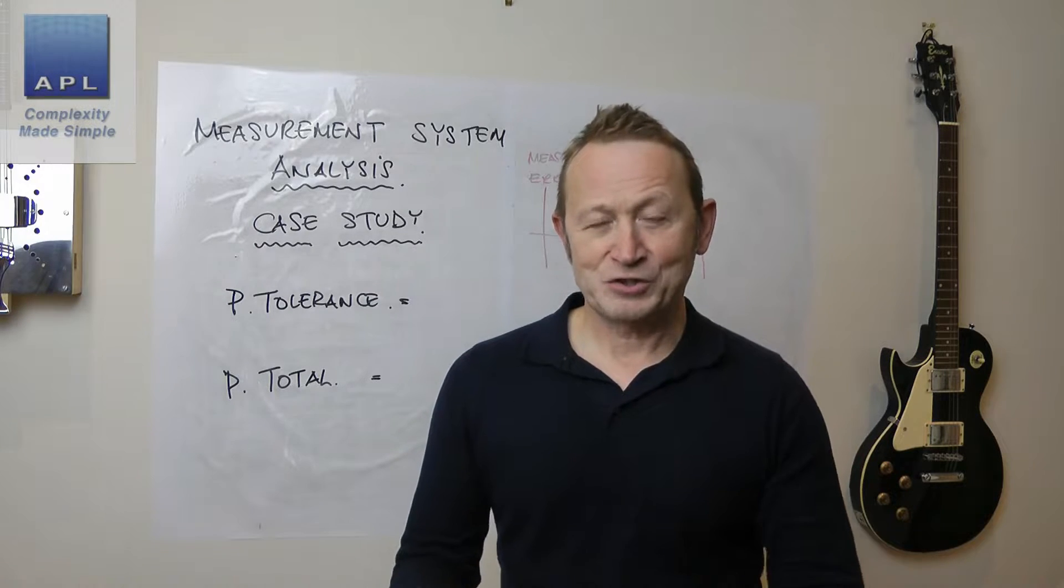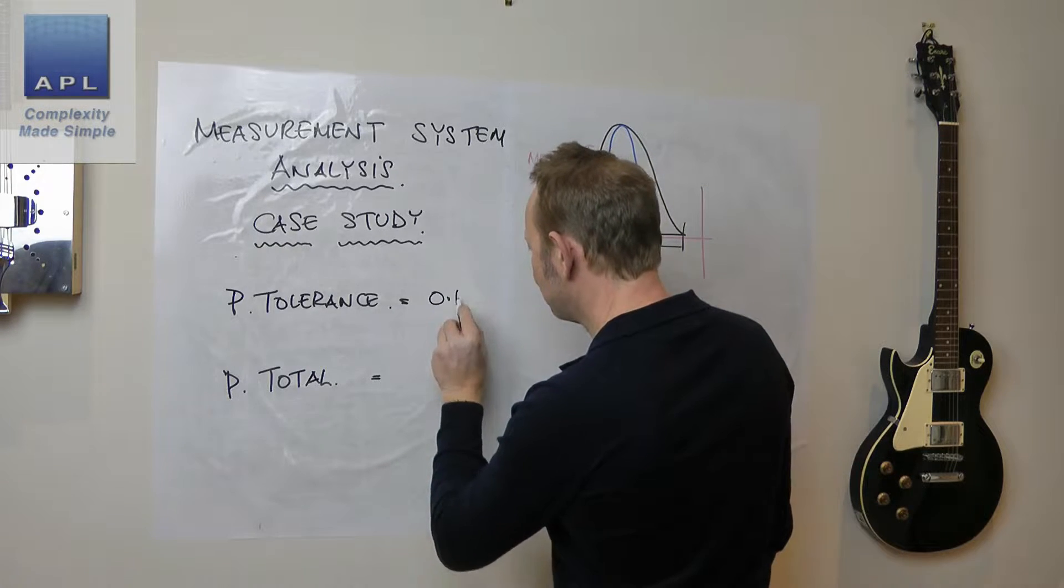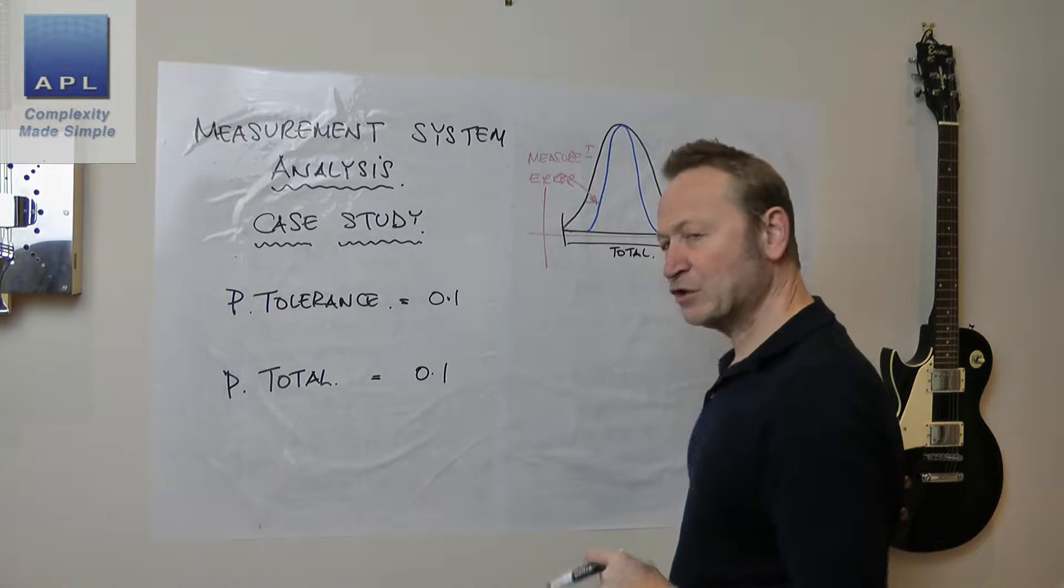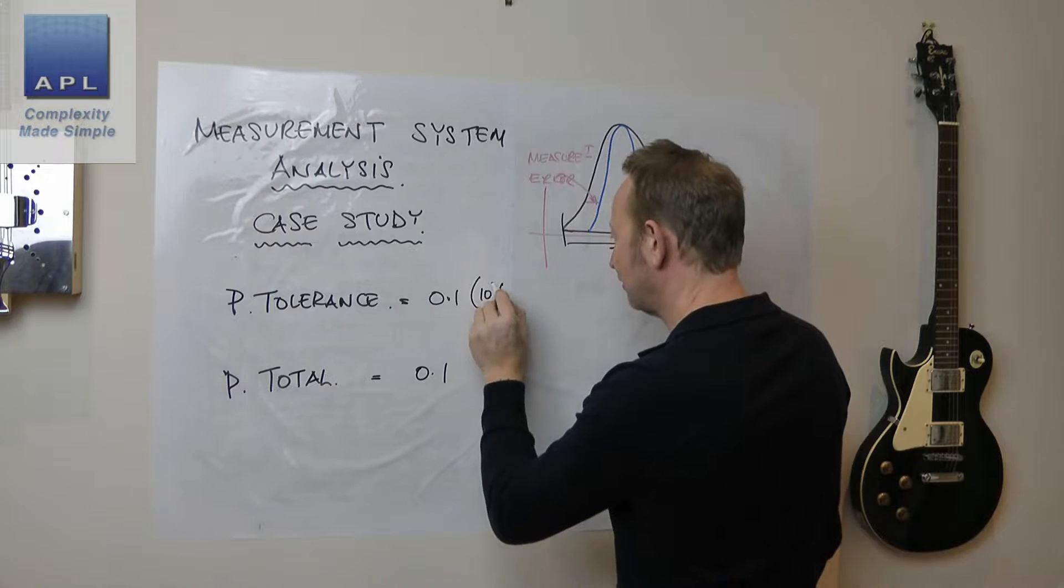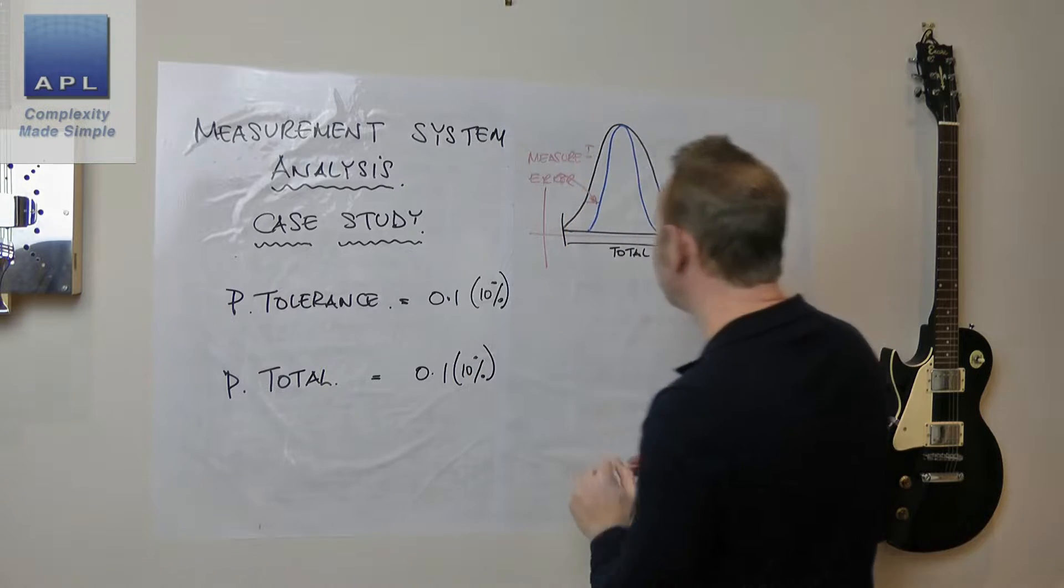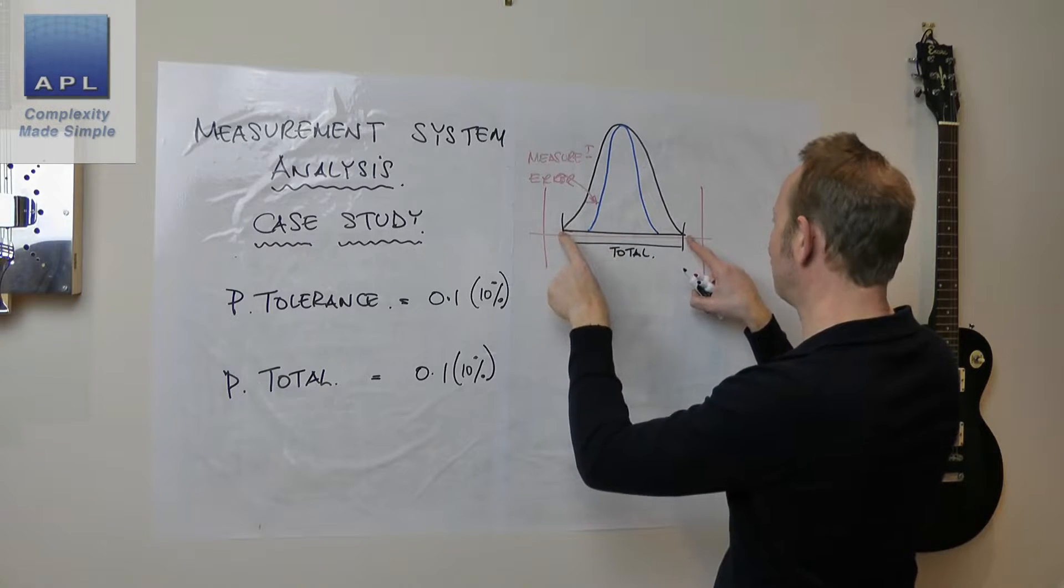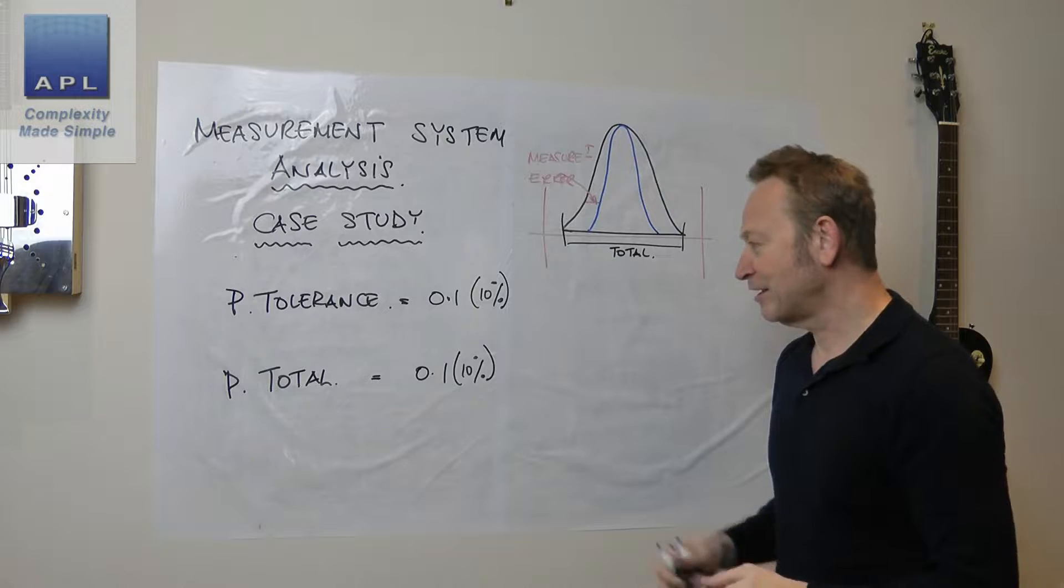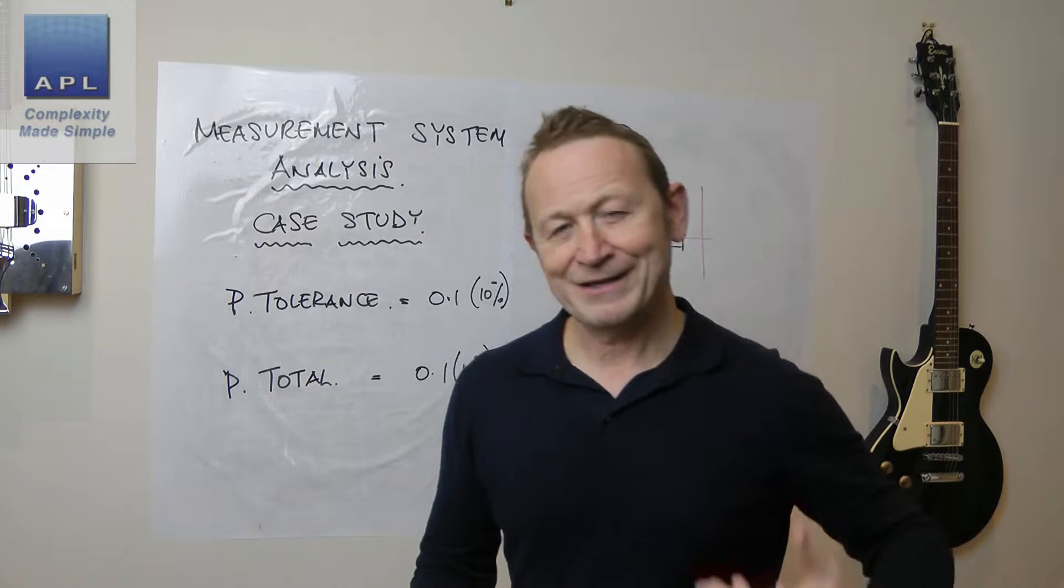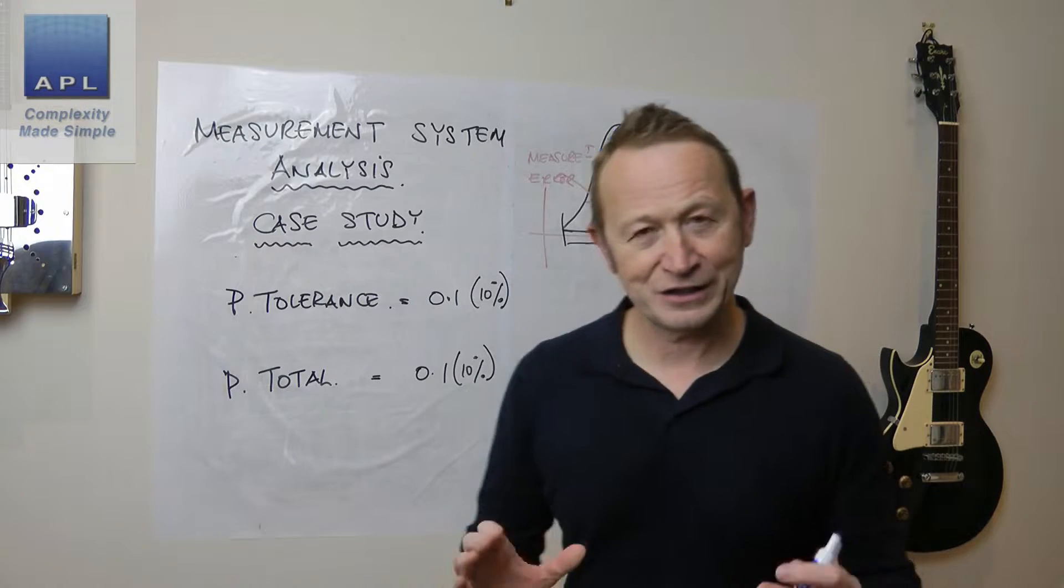Now, the reason he sent me the message is because I have a simple rule that I give out, which is basically this. I want precision to tolerance, precision to total, as a guideline to be at point one, which means what in more practical terms? Well, it means that that ratio is only 10%. So this is just 10% of the tolerance or this is just 10% of the total variability. So you want it to be below 10%. So it's not influencing your results too much. It's not making you misclassify too much. Now that's normally the rule that I give out.